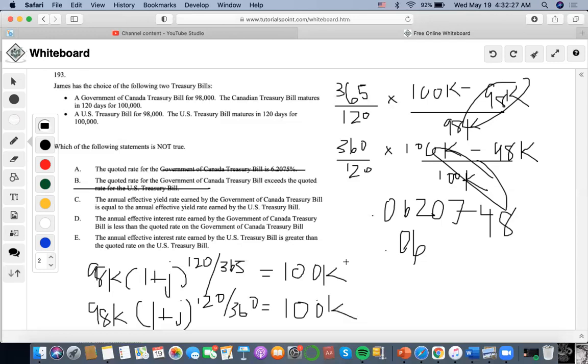So I'll do 100,000 divided by 98,000. I'm doing Canada first by the way. I'm gonna raise this to the exponential 365 over 120 and I'm gonna subtract one. I'm gonna get 0.06377.